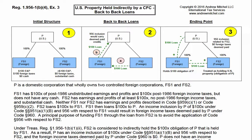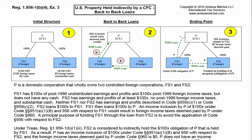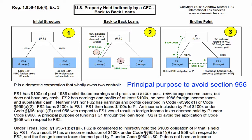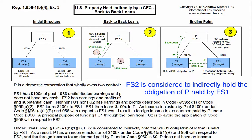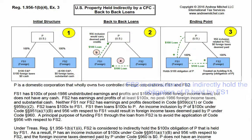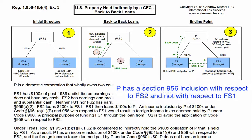In an attempt to utilize FS1's Section 902 taxes, FS2 loaned money to FS1, and FS1 in turn loaned money to P. However, since a principal purpose of funding FS1 through a loan from FS2 was to avoid the application of Section 956 with respect to FS2, the regulations provide that FS2 is considered to indirectly hold the obligation of P that is held by FS1. As a result, P has a Section 956 inclusion with respect to FS2 and not with respect to FS1.